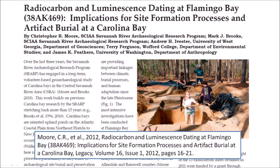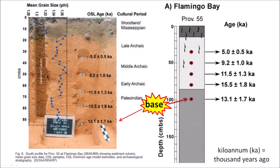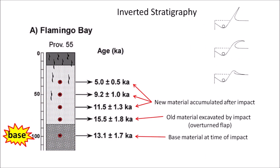A paper published in 2012 by Moore et al. reported the dates of a core taken from the rim of a Carolina Bay called Flamingo Bay in South Carolina. The sequence of dates shows inverted stratigraphy with the layer of older sediments lying stratigraphically higher than younger sediments — this is expected in the rim of an impact crater. The base layer at the time of the impact is 13.1 thousand years old, overlaid by older material dated at 15.5 thousand years, which presumably originated from an overturned flap when the rim of Flamingo Bay was formed.